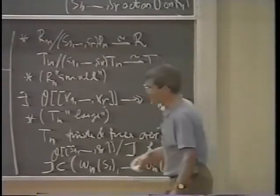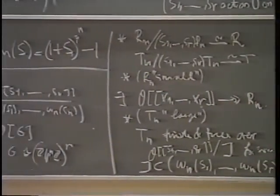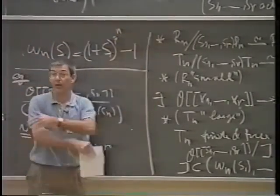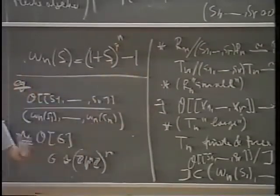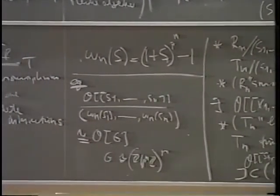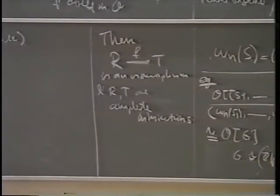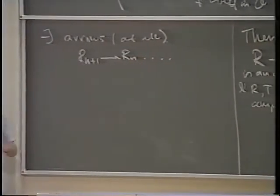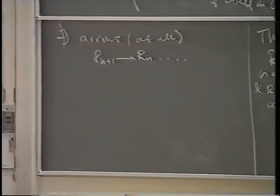Let me make a few remarks. First of all, there is no compatibility between the several diagrams here. It is just a collection of diagrams that are completely unrelated a priori — there are no arrows at all from R_{n+1} to R_n or things like that.